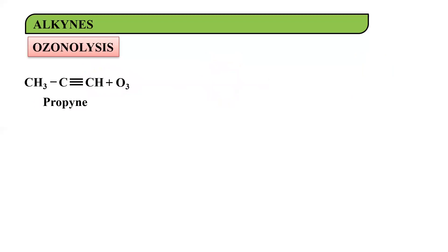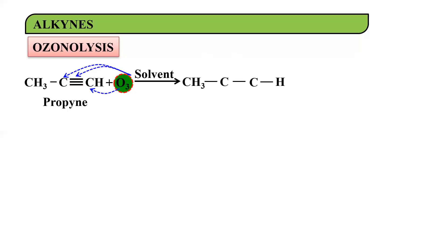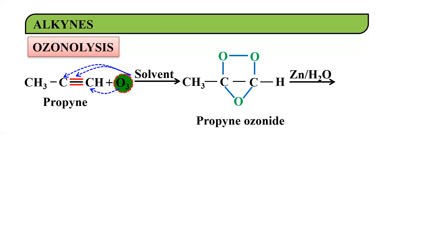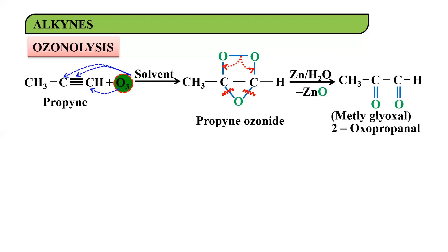Let's take an example with propyne. Adding ozone in the presence of solvent, O₃ adds across the triple bond with the carbon–carbon bond remaining intact. You get CH₃–C–C–H with oxygen added as a triangle. Then in the presence of zinc, water, and heat, the ozonoid breaks to give CH₃–C(=O)–C(=O)–H, which is referred to as methyl glyoxal or 2-oxopropanal.